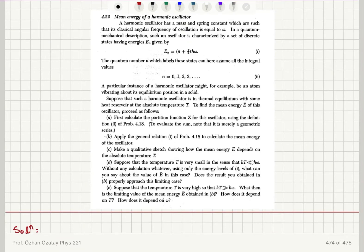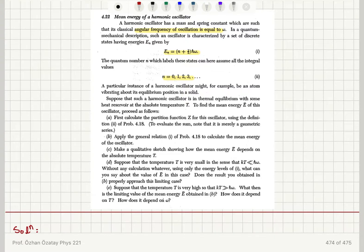A harmonic oscillator has a mass and spring constant such that its classical angular frequency of oscillation is omega. In a quantum mechanical description, such an oscillator is characterized by discrete states with energies given by (n + 1/2) h-bar omega, where the quantum number n takes integral values 0, 1, 2, 3. An example is an atom vibrating about its equilibrium position in a solid. Suppose this oscillator is in thermal equilibrium with a heat reservoir at absolute temperature T.